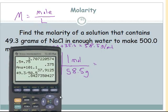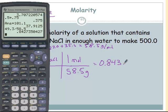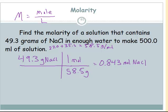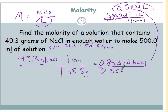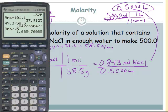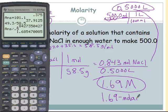For significant digits: four in my volume, only three in my mass, so 0.843 moles of NaCl. Now to find the concentration, I divide moles by liters of solution. It's 500 milliliters — moving the decimal three places gives 0.500 liters. So 0.843 divided by 0.500 liters gives us molarity. 0.843 divided by 0.500 equals 1.685, so 1.69 M — a 1.69 molar solution.